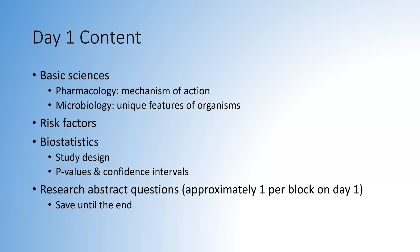Next, biostats. The U-World Q-bank has a biostats rapid review, and the AMBOSS library has a learning card on biostatistics as well. This is high-yield because it's sprinkled throughout the test. Study design specifically — cross-sectional versus cohort, case control, controlled trials — and knowing the pros and cons of each will go a long way. P-values and confidence intervals always come up. If you just know those two, you can tell whether results are significant or not without rereading paragraphs multiple times.